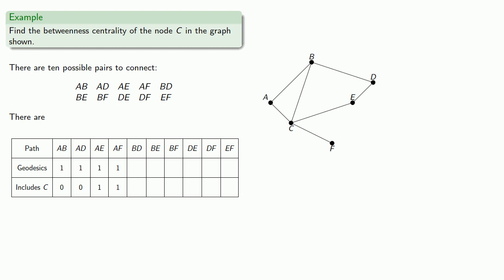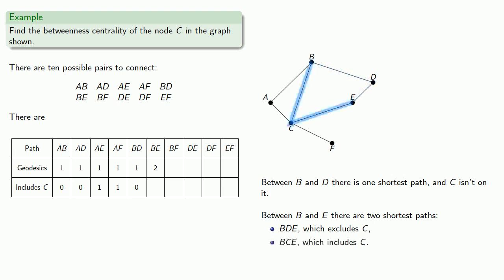Now we look at the shortest path between B and D, and there's only one shortest path, and C isn't on it, so that's one more shortest path. Between B and E, well there's actually two shortest paths: B to D to E, which excludes C, and B to C to E, which includes C.